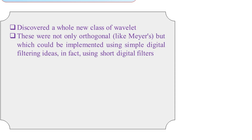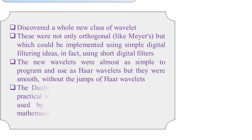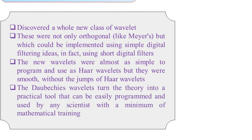The new class of wavelets by Daubechies were not only orthogonal but could be implemented using simple digital filtering ideas — specifically short digital filters. The new wavelets were almost as simple to program as Haar wavelets, but they were smooth without the jumps of Haar wavelets, which go from 0 to +1 and +1 to -1.